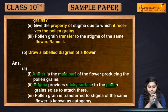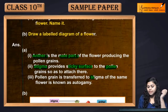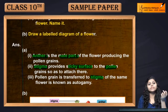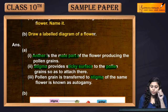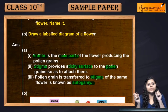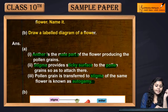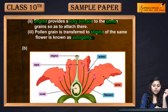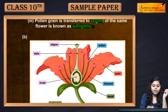When pollen grain is transferred to the stigma of the same flower, us process ko bolte hain autogamy — auto means same. Next is the structure of the flower — flower ki structure mein hum kya dekhenge.